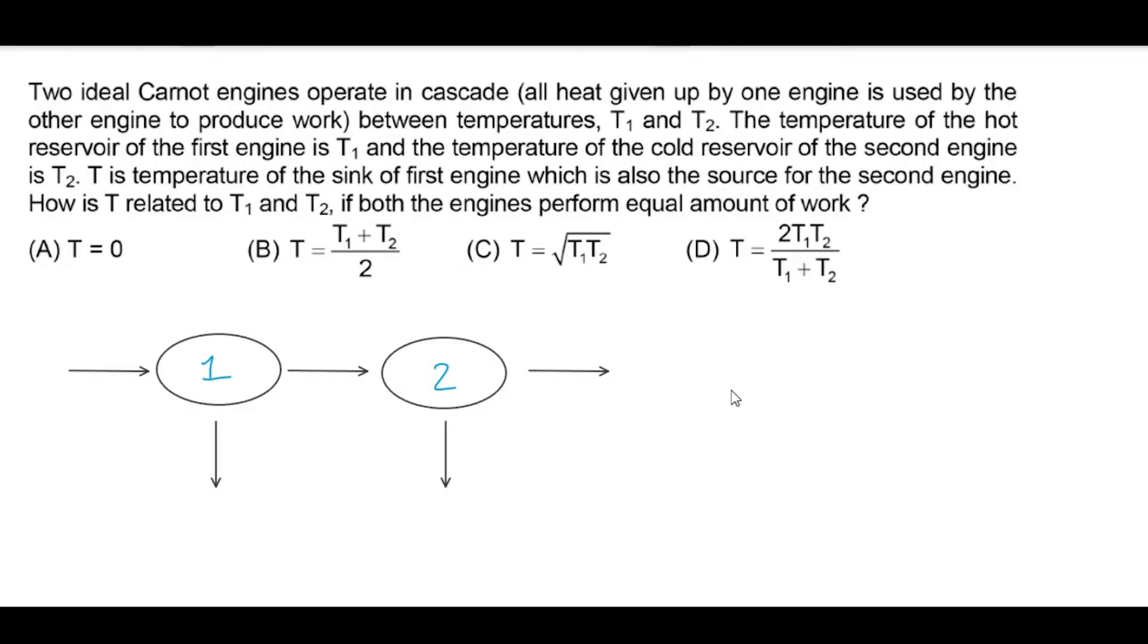Basically, cascade setup means that whatever heat the first engine will reject in its sink, that will be utilized by the other Carnot engine. The temperature of the hot reservoir of the first engine is T1. This is the first engine, its source temperature is T1. The temperature of the cold reservoir of the second engine is T2. This is the second engine and this is the cold reservoir where heat is rejected, its temperature is T2. T is the temperature of the sink of the first engine, which is also the source for the second engine.